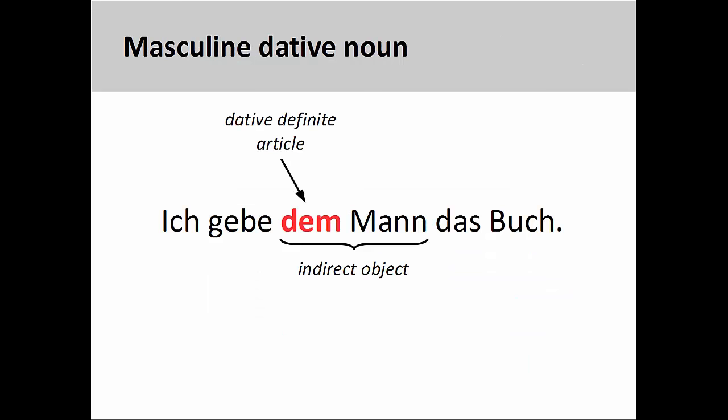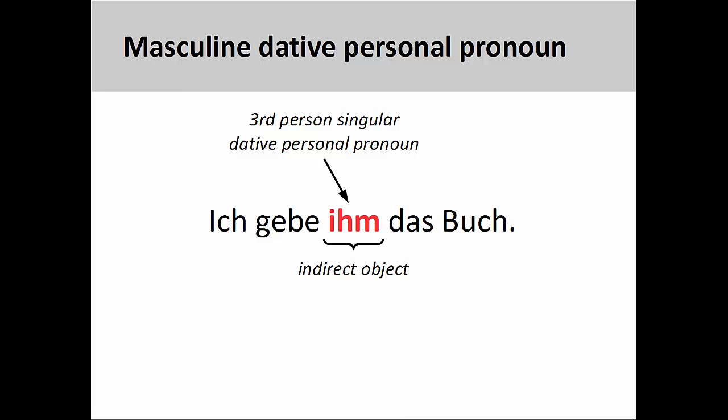Using dative personal pronouns is an easy matter that simply involves replacing the dative noun or noun phrase with the corresponding personal pronoun. Let's take a look at a few select examples. In the sentence ich gebe dem Mann das Buch — I give the book to the man — the definite article dem indicates that the masculine noun Mann is the indirect object in the sentence, and therefore in the dative case. I can replace the noun phrase dem Mann with the third-person singular dative personal pronoun ihm.